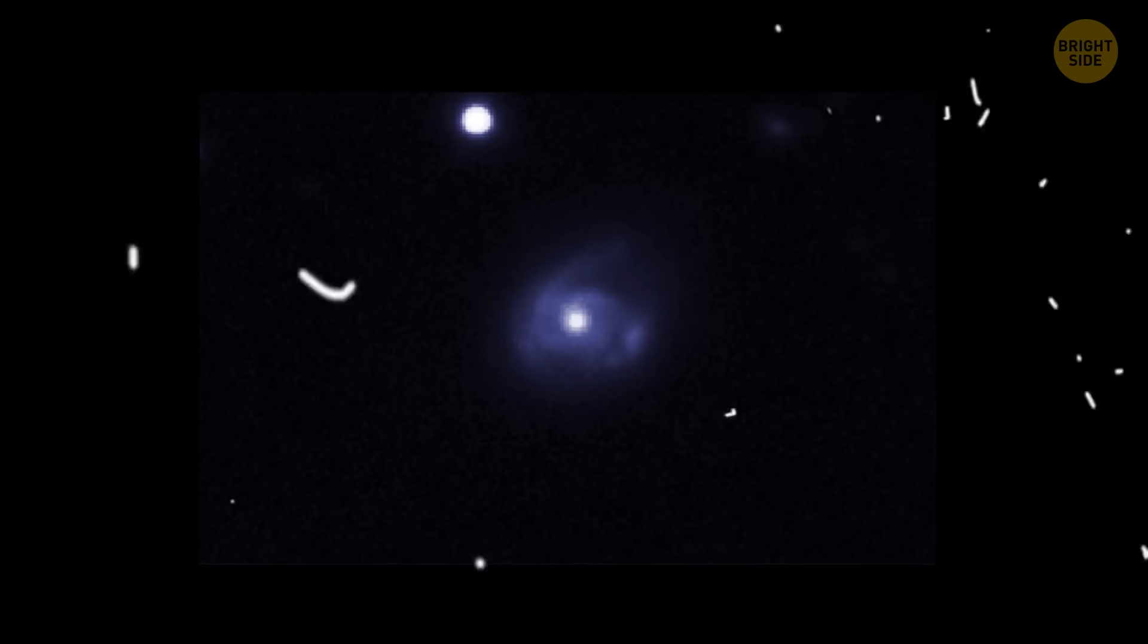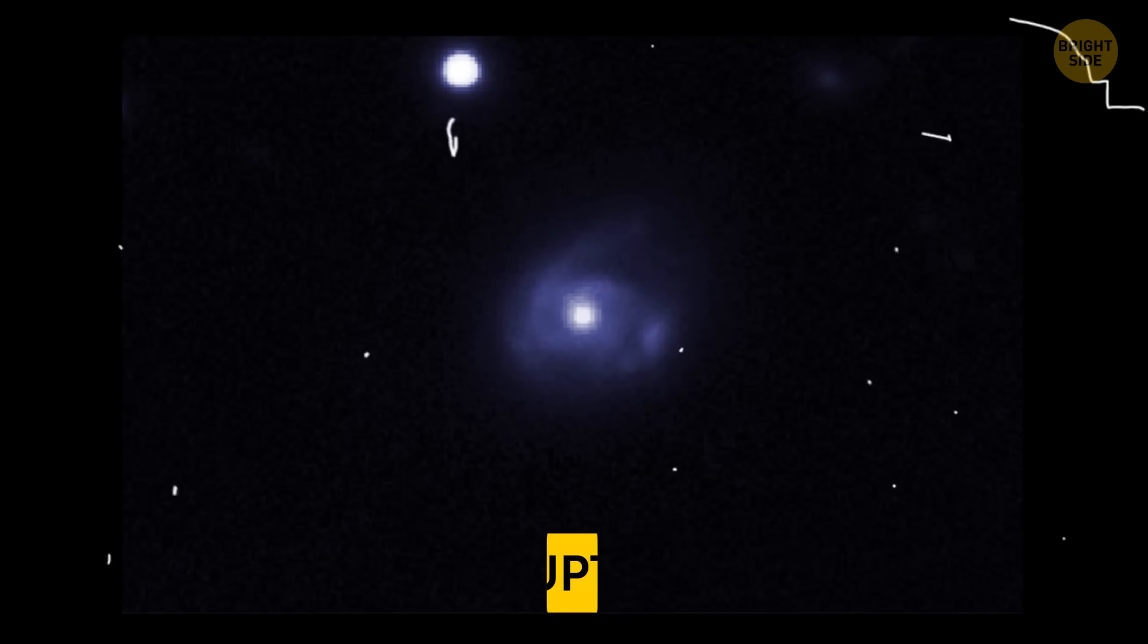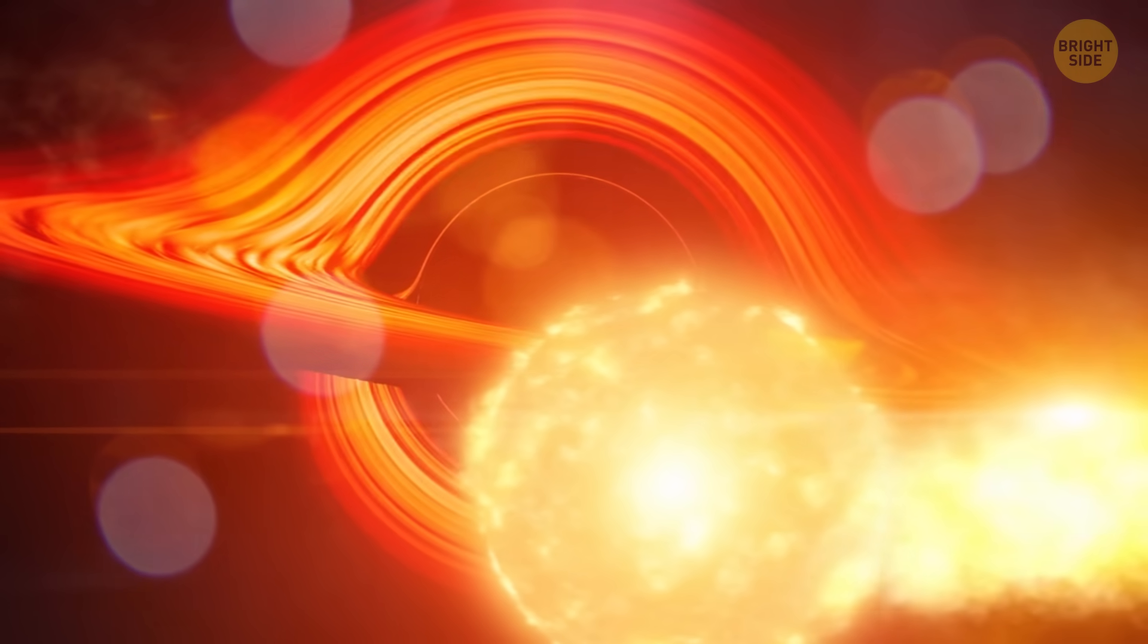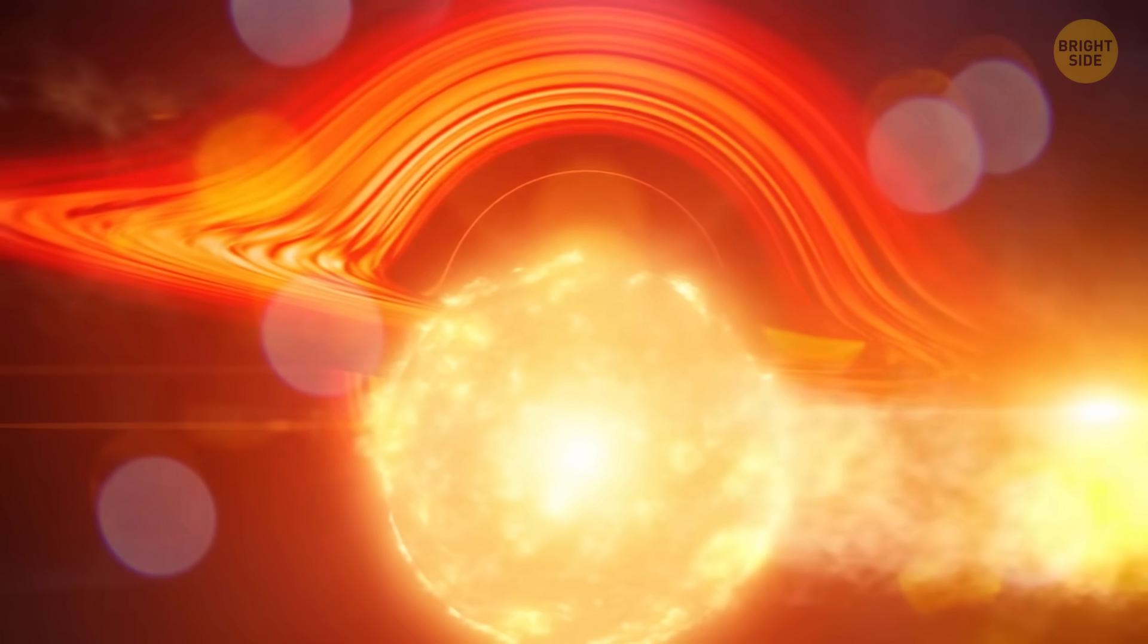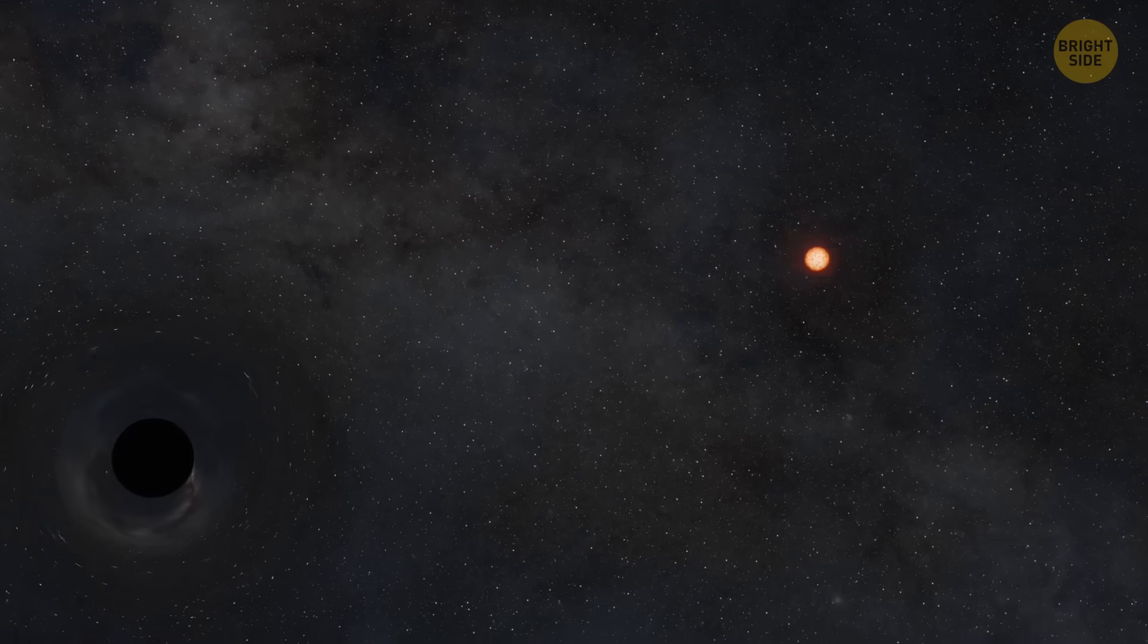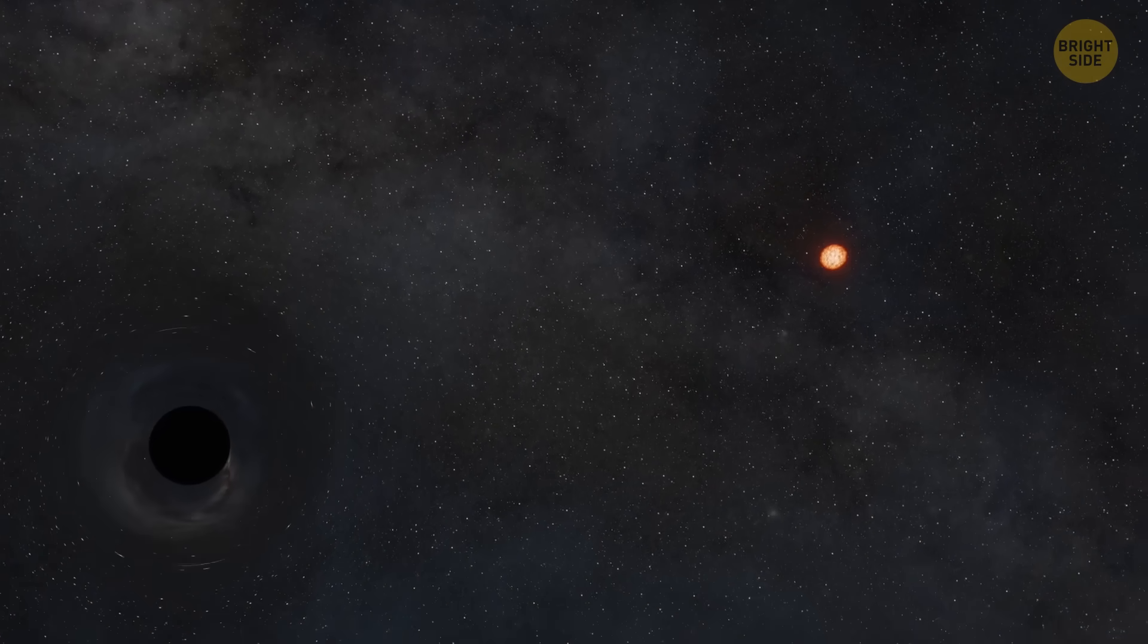Another explanation for our mysterious space explosion, and astronomers think it's the most likely one, is a tidal disruption event. It happens when a black hole swallows a star, causing a flash of light. When a star gets too close to a supermassive black hole, it doesn't get off easily.